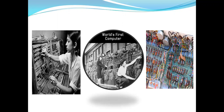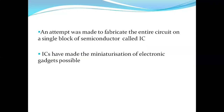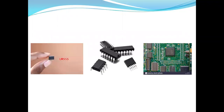IC plays a major role in the miniaturization of electronic gadgets. Earlier the electronic circuits were prepared using more number of components and the circuits were not reliable. So an attempt was made to fabricate the entire circuit on a single block of semiconductor, called an IC. ICs have made the miniaturization of electronic gadgets possible. Here the figure represents the structure of an IC, and by the use of ICs the circuit becomes very small.